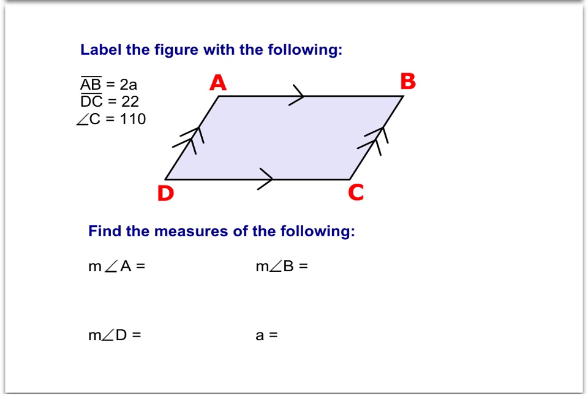We're told that side AB has a measurement of 2a, side DC has a measurement of 22, and the measure of angle C is 110 degrees.